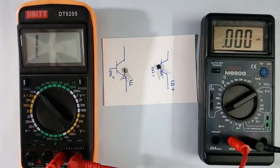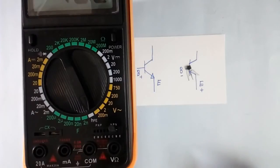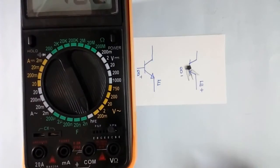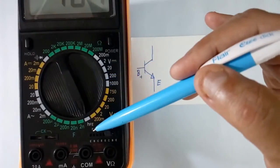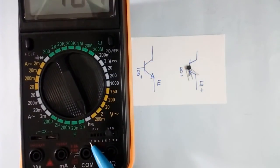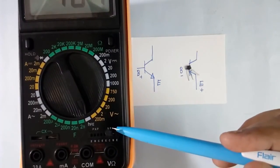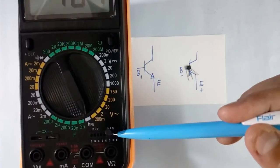Now I will measure the HFE of both the transistors. I am measuring HFE for NPN transistor. The switch position has been kept at HFE. Now these are the point where we connect the transistor. There are 2, one is NPN, one is PNP. So because I am checking NPN, I will connect here.